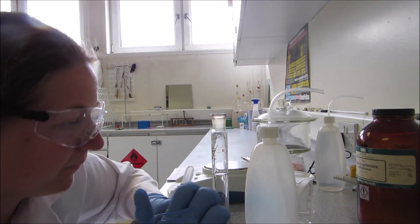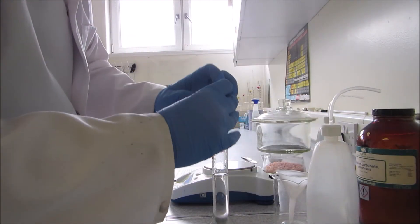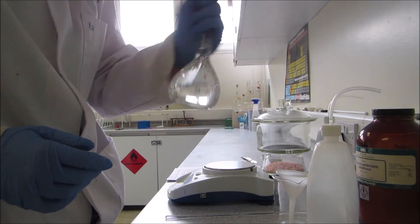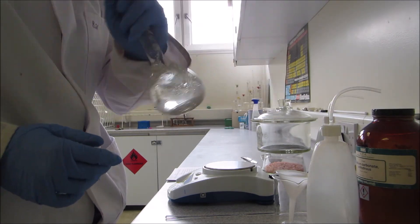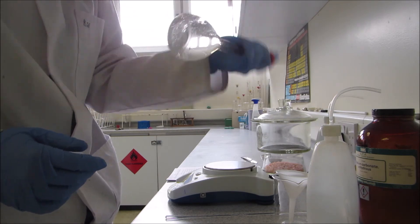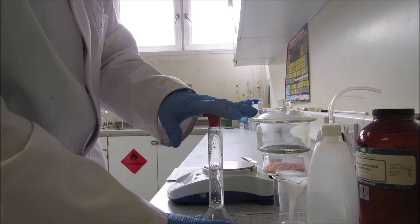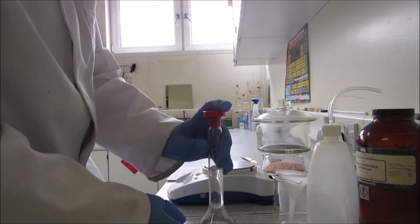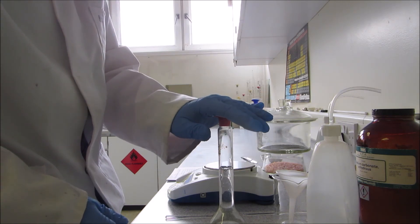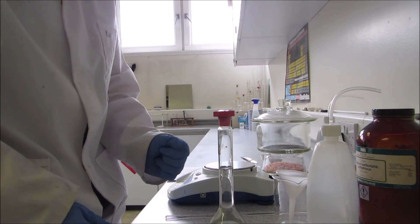And there we go. I put on my lid, give it a shake, and I've just made up a standard solution with 1.2 grams of sodium carbonate and 250 ml of water. The next step is to standardize this against a known solution to check the accuracy of my standard solution and calculate its true concentration. This will be done in another video.